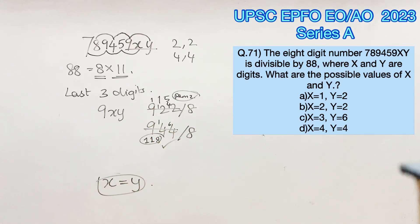Therefore 944 is divisible by 8 and thus the 8-digit number is divisible by 88. Therefore option D is the right answer. See you in the next video.